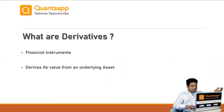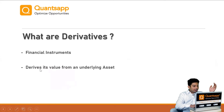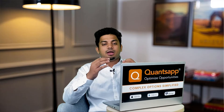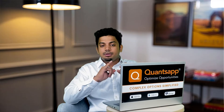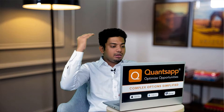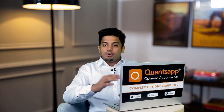The second key phrase is 'derives its value from an underlying asset.' The financial instruments here are deriving their value from an underlying asset. What is an underlying asset? An underlying asset can be stocks, it can be an index, it can be currency, it can be gold. Those are underlying assets, wherein the financial instrument derives its value from its underlying.